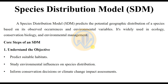Now we are discussing the topic of Species Distribution Model (SDM) in R Studio. A Species Distribution Model predicts the potential geographical distributions of a species based on its observed occurrences and environmental variables. It is widely used in ecology, conservation biology, and environmental management. The core steps include understanding the objective, predicting suitable habitats, studying environmental influences, and informing conservation decisions or climate change impact assessment.